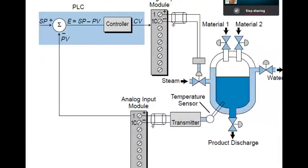For example, we have a temperature transmitter sending signals to analog input modules. In the controller, the first key term is the set point — the value you want the controller to achieve. An operator gives that value to the controller, saying 'I need this temperature.' For example, if you set it to 100, the controller has the responsibility to make it 100.